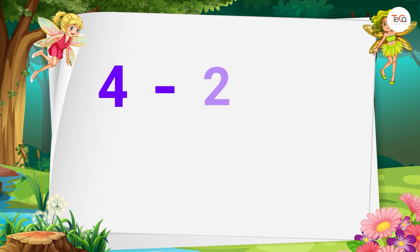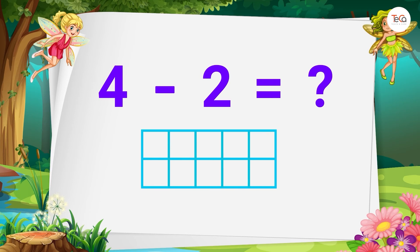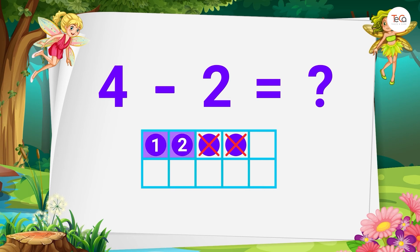First, 4 minus 2 equals... We draw 4 dots, then cross out 2 dots. Let's count the dots left to find the difference. Here we have 1, 2. 2 dots left. So 4 minus 2 equals 2.